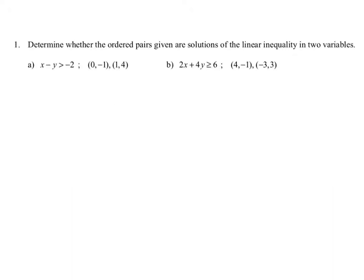Determine whether the ordered pairs given are solutions of the linear inequality in two variables. We begin with the inequality x minus y is greater than negative 2. We are going to check to see if our given points — (0, -1) and (1, 4) — are solutions to that inequality. In each case, we would determine if the inequality is true or false.